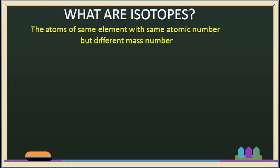For example, we are going to talk about hydrogen. Why hydrogen? We will talk about atomic number 1. Isotopes are atoms of the same element with the same atomic number, but with different mass numbers — different mass numbers.